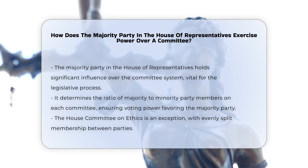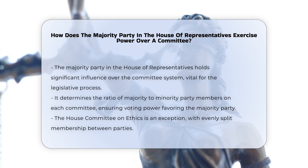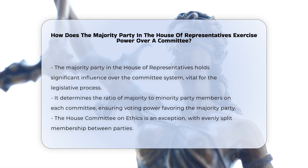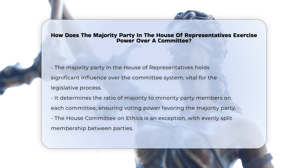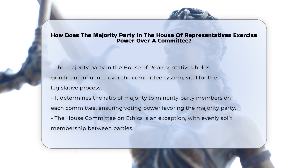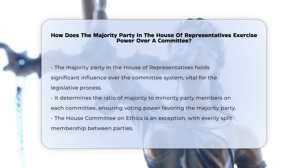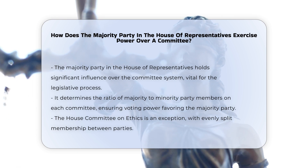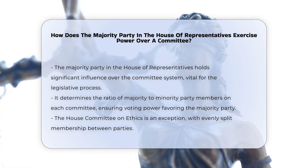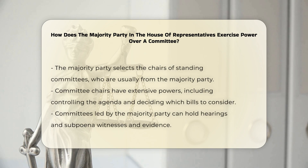In the House of Representatives, the majority party holds significant influence over the committee system, which is a crucial part of the legislative process. Committee membership and ratios: the majority party determines the ratio of majority-to-minority party members on each committee, except for the House Committee on Ethics, where the membership is evenly split between the two parties. This control over committee ratios ensures that the majority party has sufficient voting power to pass legislation they favor at the committee level.